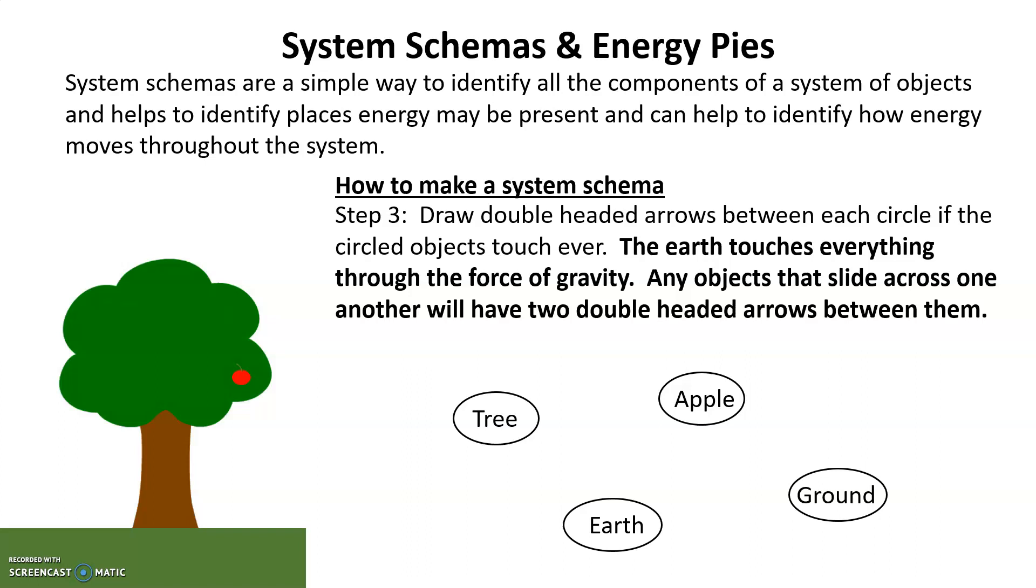The earth is going to touch everything, so there's going to be an arrow between the earth and the tree, earth and the apple, earth and the ground. The apple touches the tree, and the apple touches the ground when it hits the ground, and also the ground and the tree are touching.